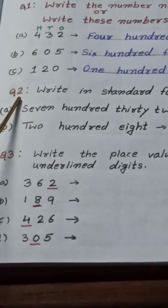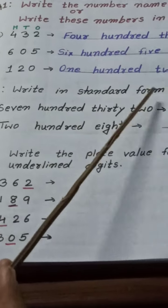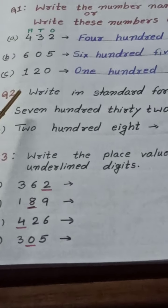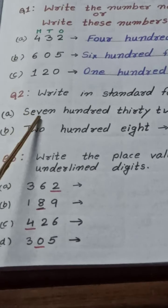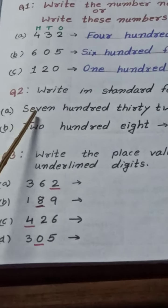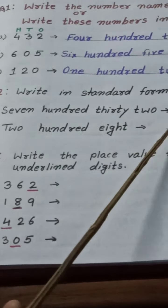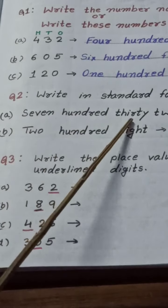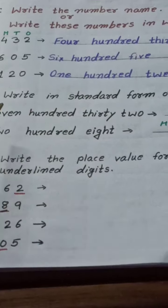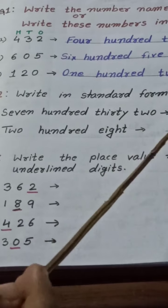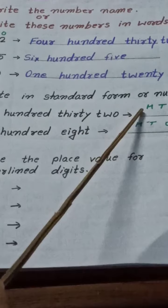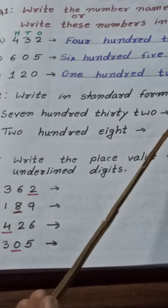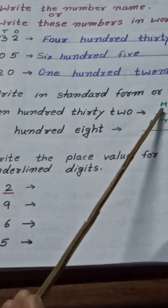Let's see question number 2: write in standard form or numeral. This question is just the reverse of question number 1. Here it is given in words — the number is expressed in words and we have to write it in standard form. First we read 732. Before writing the number, first we put here the place value.